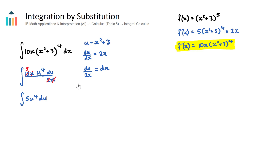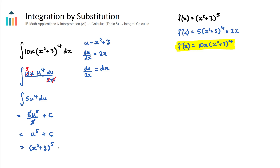Now we integrate ∫5u⁴ du using the standard rule — raise the power by 1 and divide by the new power: 5 × u⁵/5 + c. The 5s cancel, leaving u⁵ + c. Finally, we replace u back with x² + 3, giving us (x² + 3)⁵ + c. This matches our original function, confirming we've successfully integrated using integration by substitution.